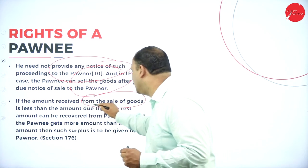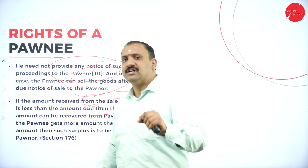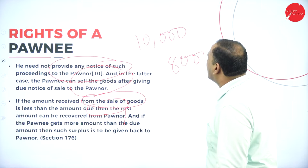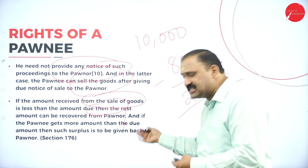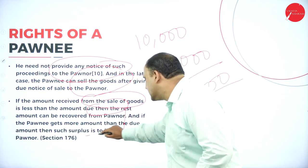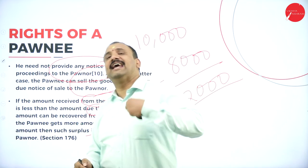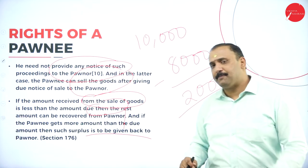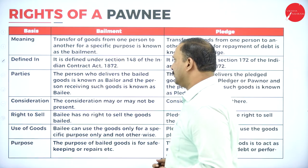In the latter case, the pawnee can sell the goods after giving due notice of sale to the pawner. If the amount received from the sale of goods is less than the amount due, the remaining balance can be recovered from the pawner. For example, if the debt is 10,000 rupees but the sale yields only 8,000 rupees, the difference of 2,000 rupees can be recovered from the pawner. Conversely, if the pawnee receives more than the due amount, the surplus must be returned to the pawner.